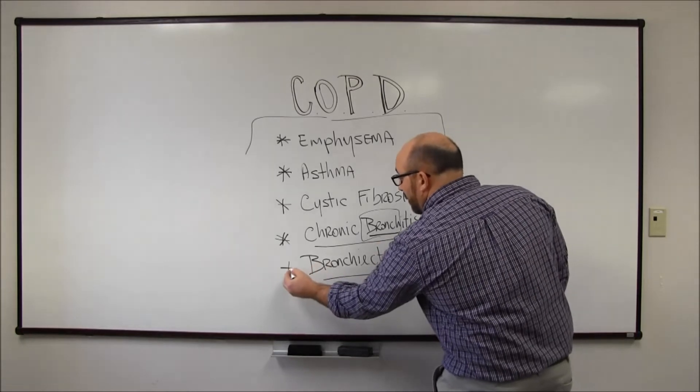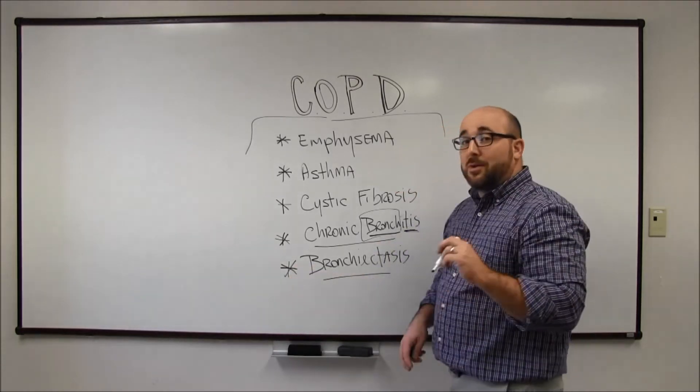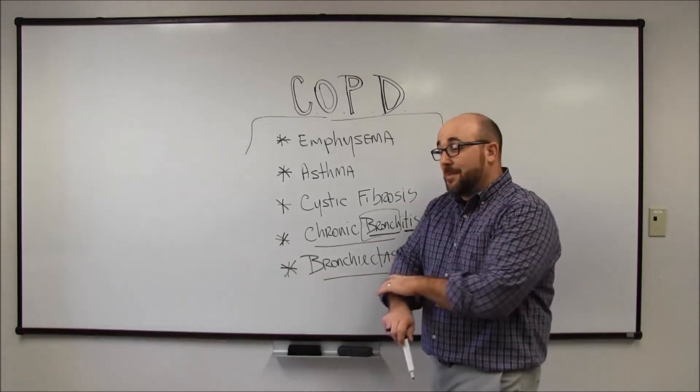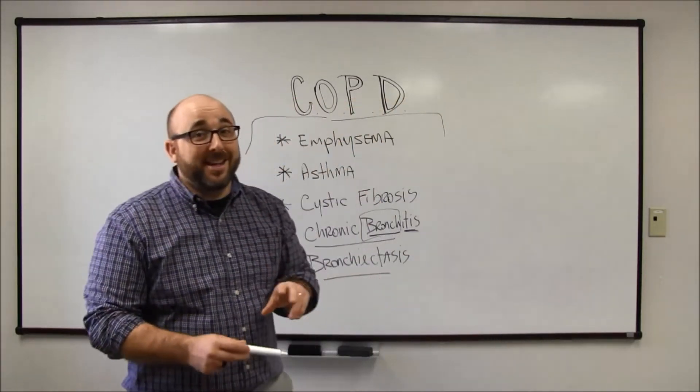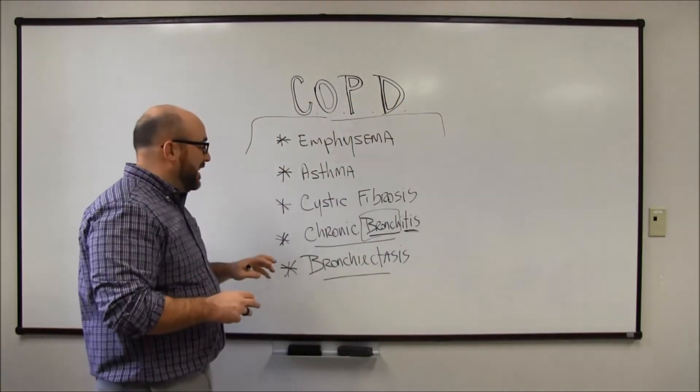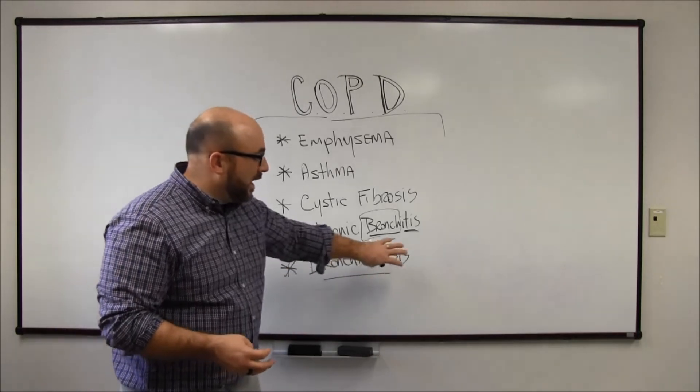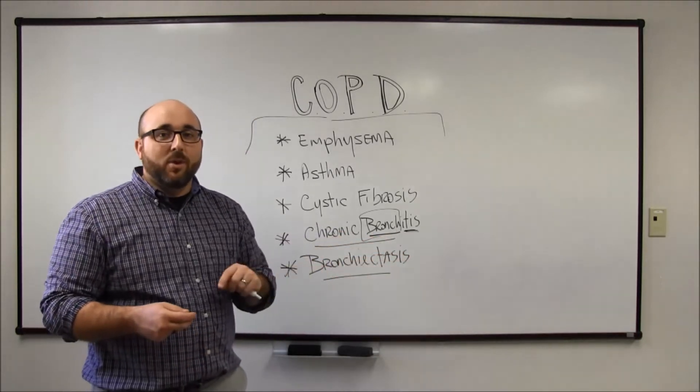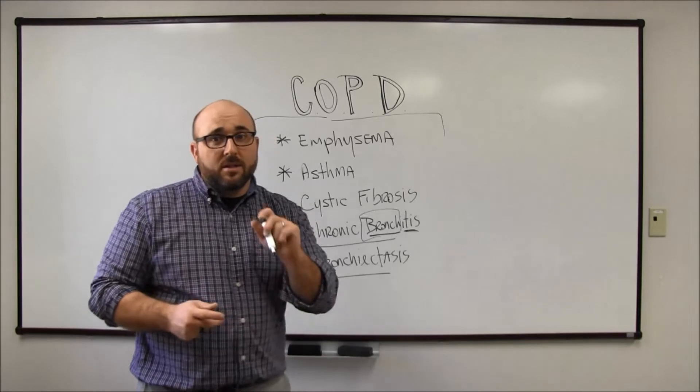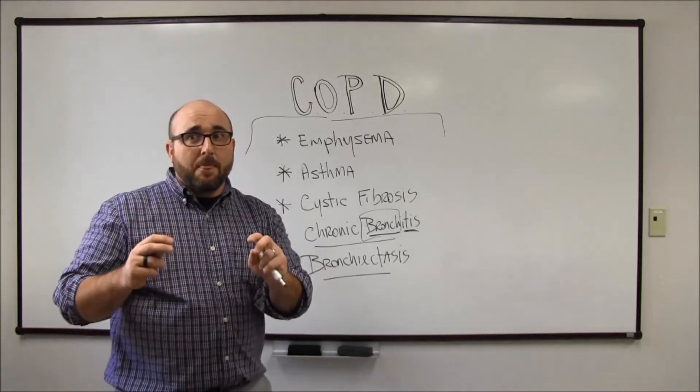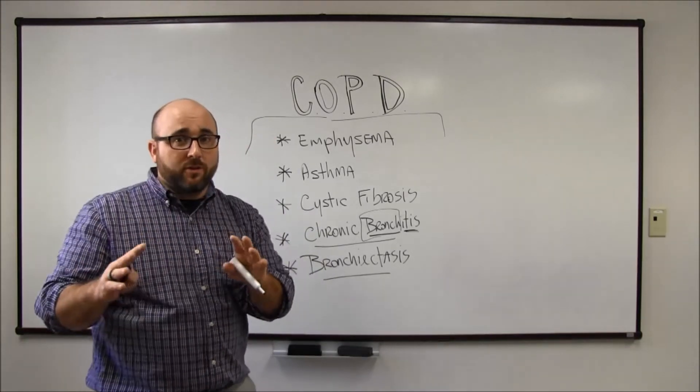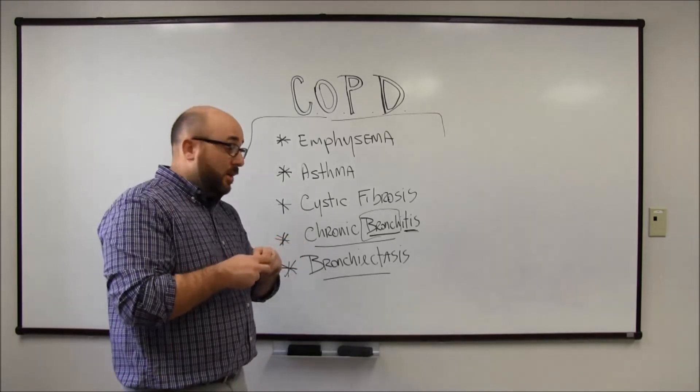The last one is called bronchiectasis. You probably wouldn't know nothing about bronchiectasis unless you had bronchiectasis. Bronchiectasis is you have a lot of mucus produced with this disease and you have obstruction to expiratory flow. So let's look at what the obstruction or the blocking of that expiratory flow looks like in your airways.